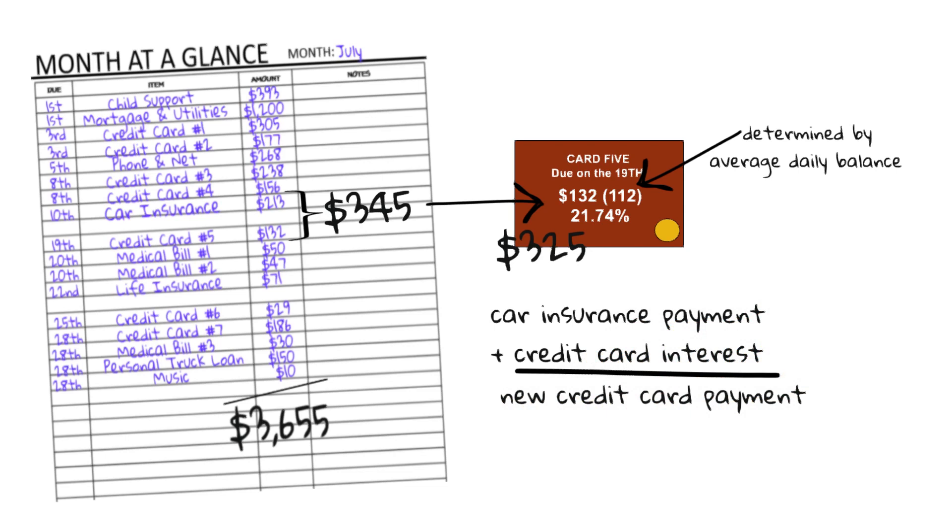And you can see at my month at a glance that my car insurance comes out first and then my credit card is due like nine days later. That's not going to be the case anymore.